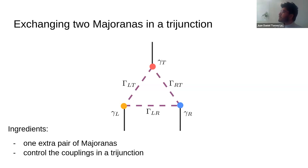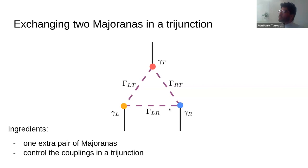The minimal ingredient for this proposal is to exchange the position of two Majoranas — gamma left and gamma right. We need an extra pair of Majoranas to temporarily move the quantum information to a different place. We also need control of the different couplings of the Majoranas in the trijunction — we need to tune the couplings gamma_LT and others very precisely. It is not even clear if it's possible to control all these parameters, since in models they are just set as numbers, but in real experiments they arise from manipulating real gates.